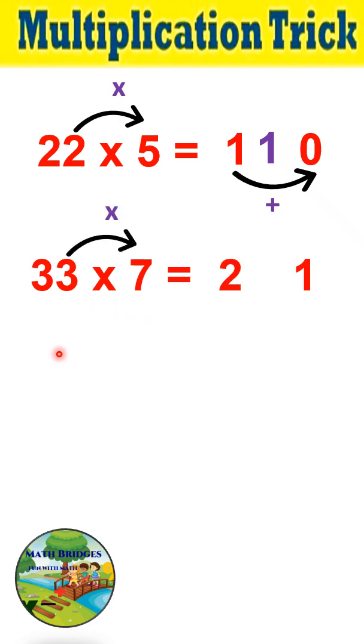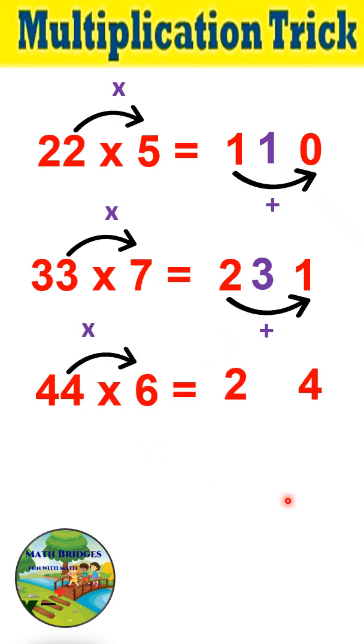Now 33 times 7. First step: 3 times 7 is 21. Leave some space in the center. Now 2 plus 1 is 3, so 231 is your answer. Next, 44 times 6. First step: 4 times 6 is 24. Second step: 2 plus 4 is 6, so 264 is the product.